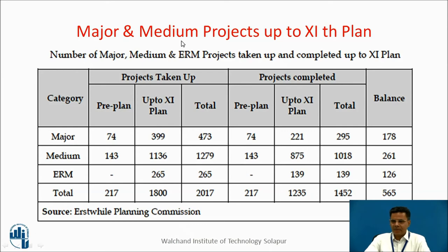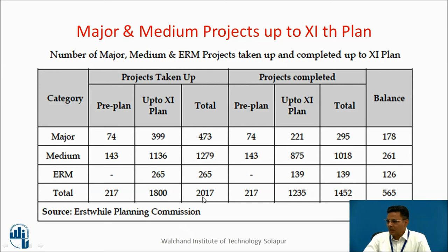We will now discuss major and medium water resources projects taken up and completed up to the 11th Plan. Projects taken up by end of the 11th Plan were 399 major projects, 1,136 medium projects, and 65 ERM projects. Including pre-plan period and up to the 11th Plan, 437 major projects were undertaken, of which 295 are completed. Out of a total 2,017 projects, 1,452 have been completed by the end of the 11th Plan, and 565 water resources projects are still under progress.